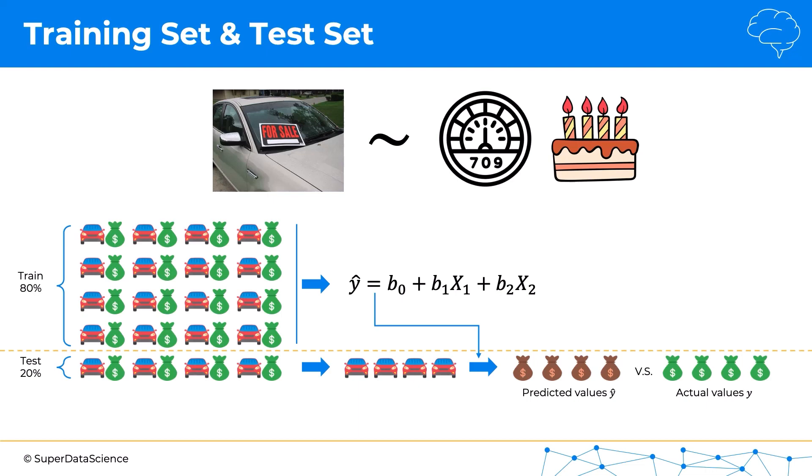And so from that we can evaluate our model. Is it doing a good job? Is it doing a not so good job? And do we need to improve it? And that's how we split a training set and a test set and that's why it's important to do that. I look forward to seeing you on the next tutorial, and until then, enjoy machine learning.